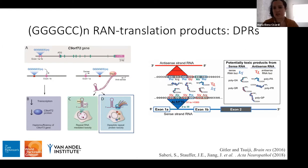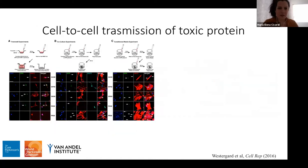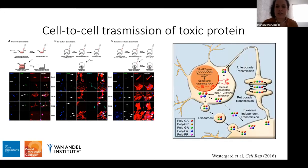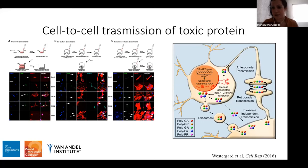PolyGP and polyPG are usually considered the same protein. Among these DPRs, GR and PR are the ones associated with neuronal toxicity. A recent paper from the lab I'm working in demonstrated that DPRs can be transmitted from cell to cell — from neurons to neurons and from neurons to astrocytes — through three mechanisms: anterograde transport, exosome-independent transport, and exosome-dependent transmission.